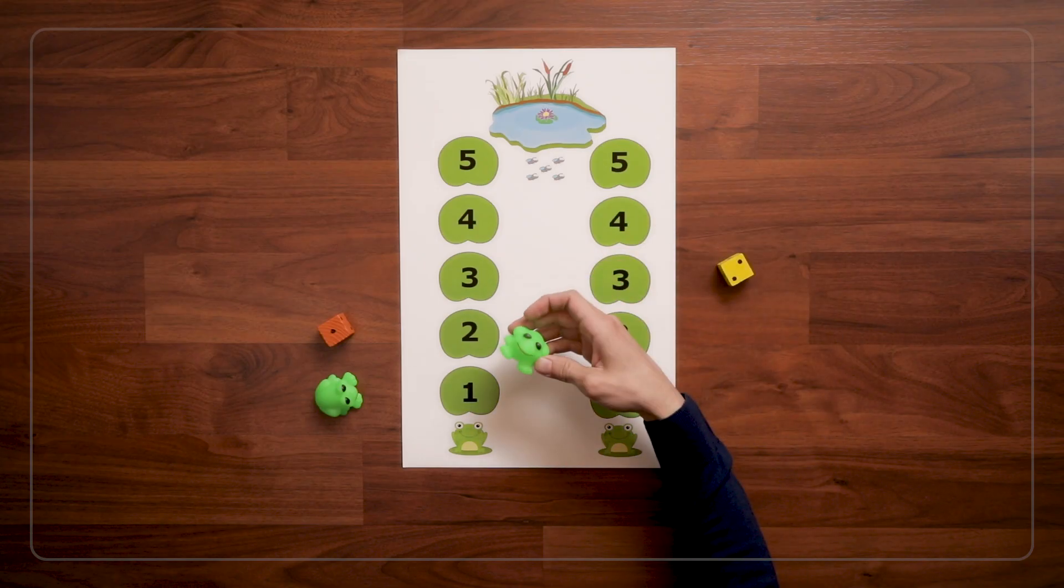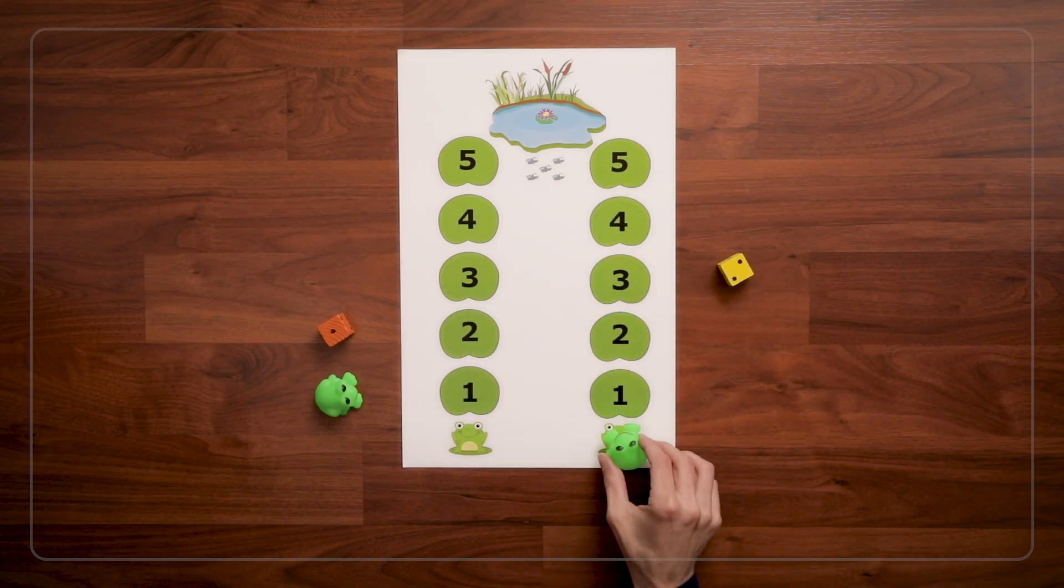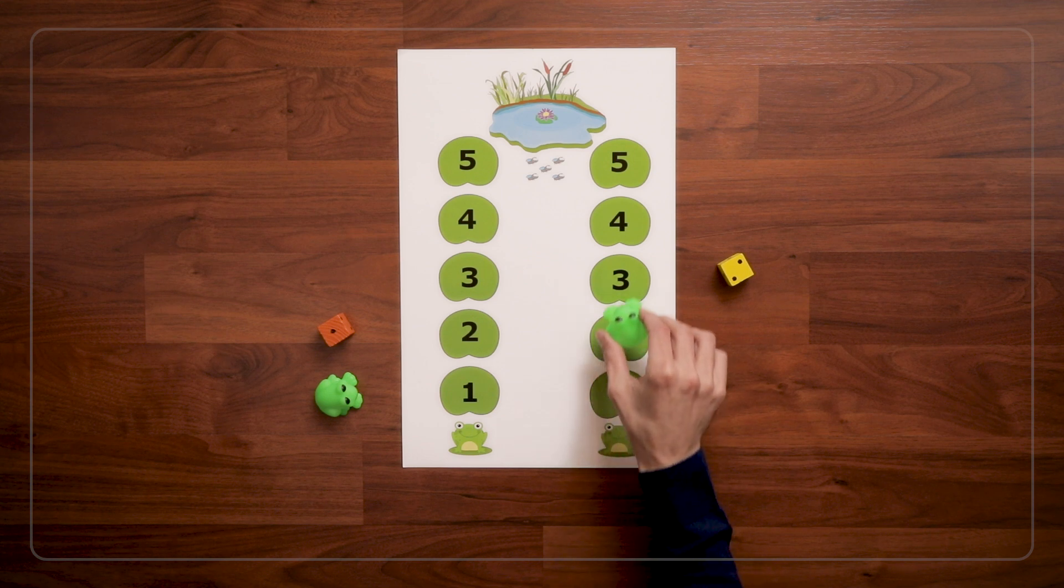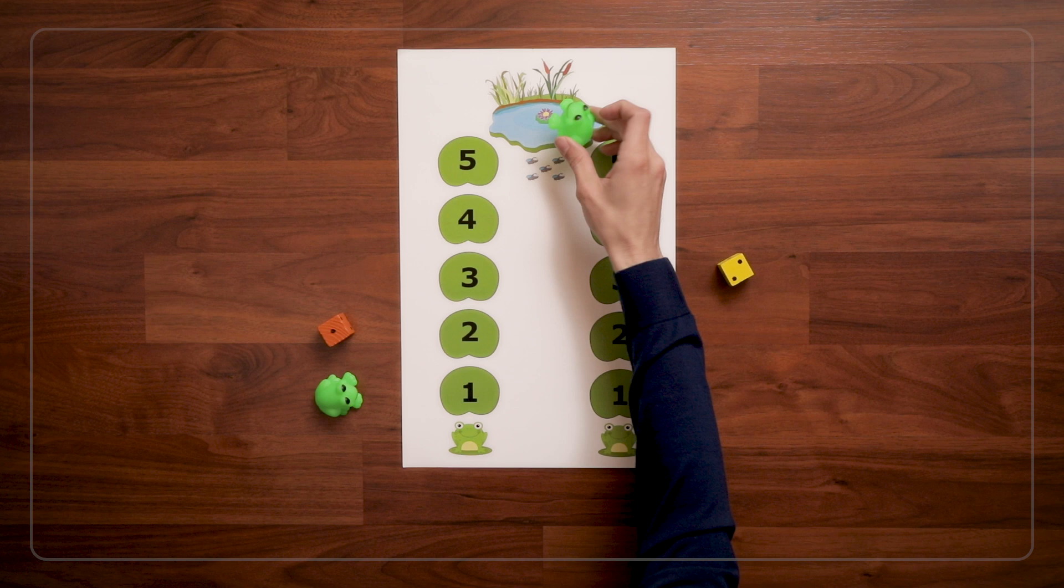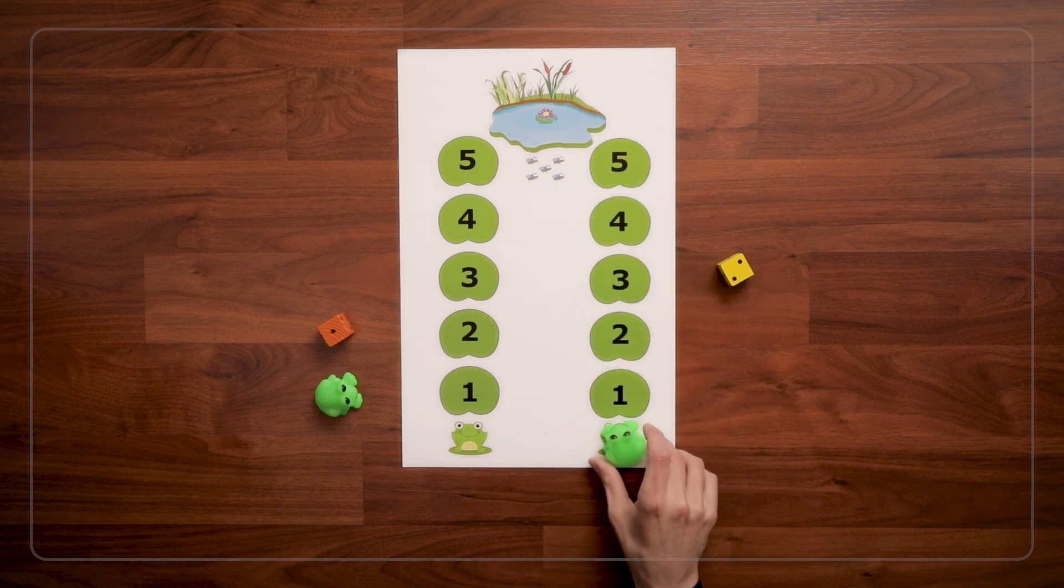So, here we have our little frog. And the frog is going to start at home, where he lives. And the frog wants to hop all the way to the pond to go for a swim. When first playing this game, you can start by asking kids what they notice about the board.